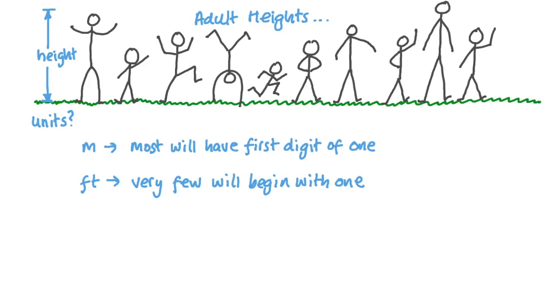But if we think about it for a moment, we can see that this law would only work with certain kinds of distributions of numbers. For example, if you were to take adult heights in meters, we would expect many more than 30% of them to begin with a 1. And if you took those same heights in feet, then almost none of them would begin with a 1.